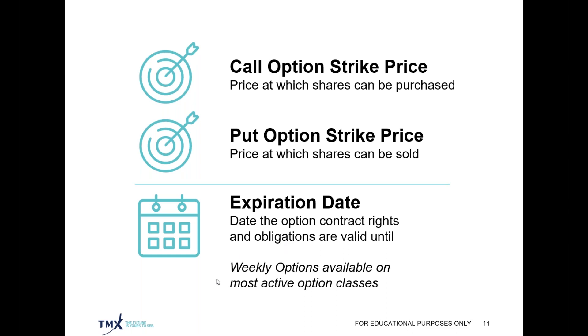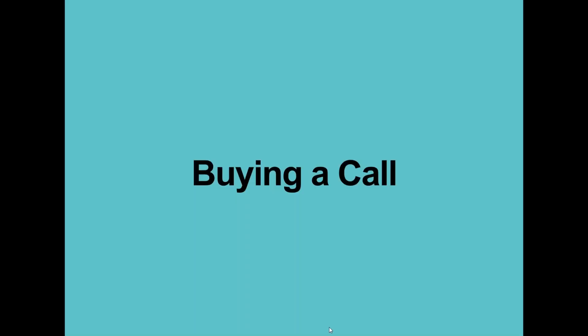One of the ways to rationalize your expiration date selection is to ask yourself why you're looking to use the option and for how long you think you'll need to have that position in place. Remember, you can close the positions out at any time — you can sell the option contracts back to the market if you're the buyer, or buy to close if you're the seller, at any point before expiration.